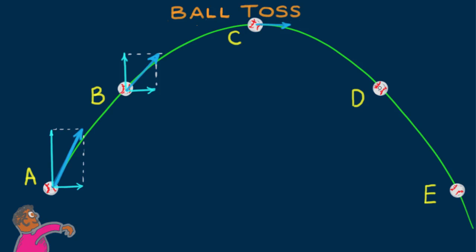Zero if tossed vertically. At other angles, velocity at the top is the same as the initial horizontal component of velocity, and the horizontal component at other positions.